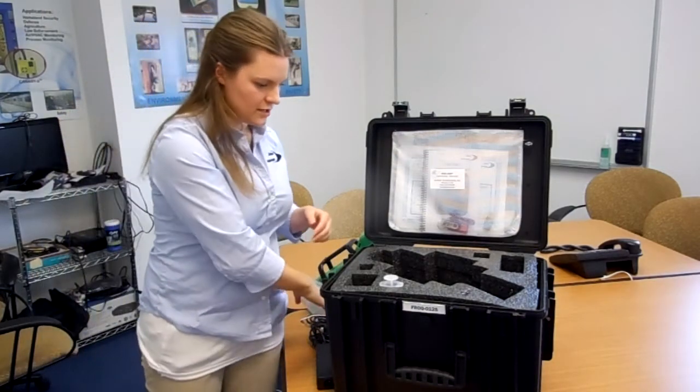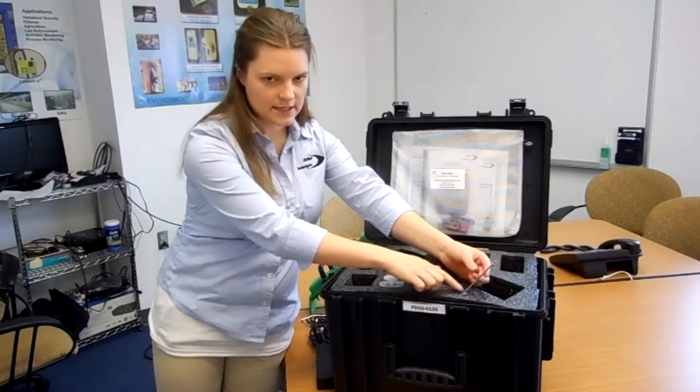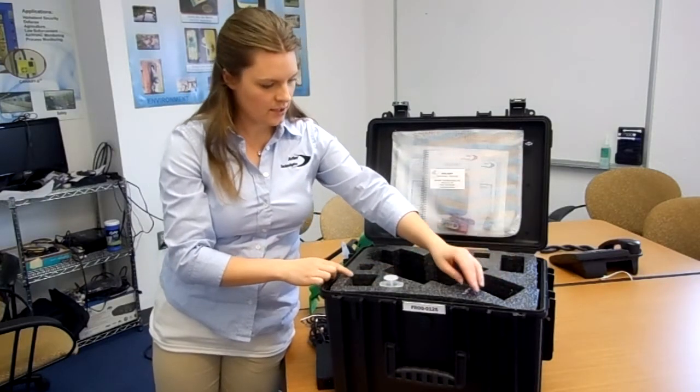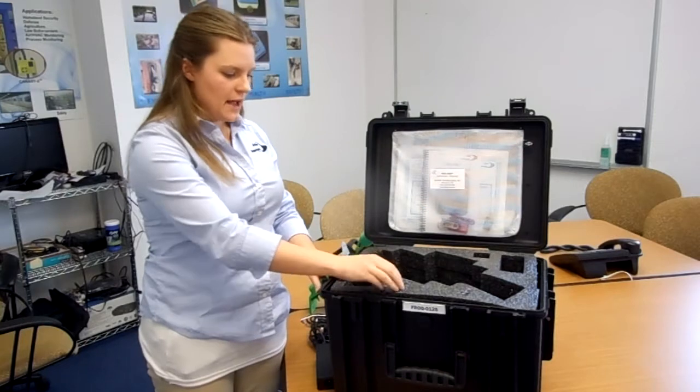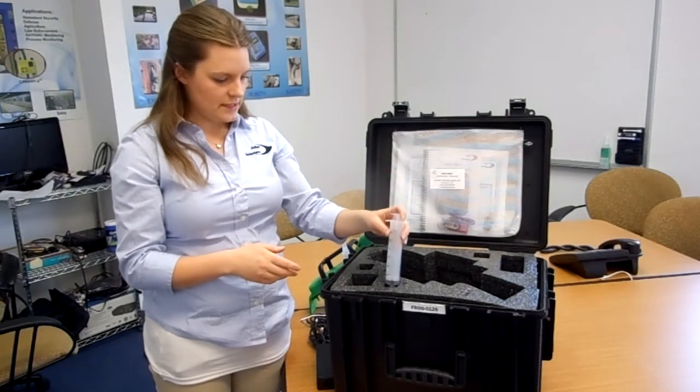And then to go along with the air sampling kit we also have this air sampler wand that's just in the sleeve right in the very front of the case. Also in the case we have a 60 milliliter syringe for rinsing the frog for doing water sampling.